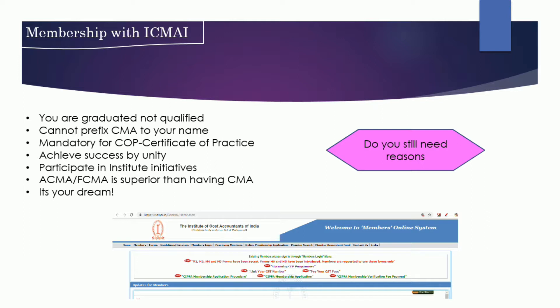To achieve success you also need to have support from various industry experts, and that is only possible if you have unity. To have unity you need to ensure you become a member. Along with membership, you also get to know a lot of members who have a lot of experience. With that unity we can achieve success, and you can participate in a lot of initiatives which the institute takes for the development of the nation and contribute from the CMA fraternity.